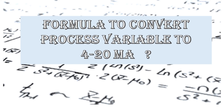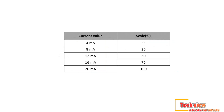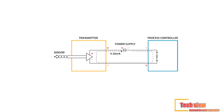In the previous lesson we discussed about the 4 to 20 milliamps used in industrial automation. In the calibration and configuration of field instruments, we have to convert milliamps to process variable. Let us discuss how to convert process variables to milliamps. Engineers and technicians use some formulas that help make this easy. Let's explain some useful formulas and calculations.